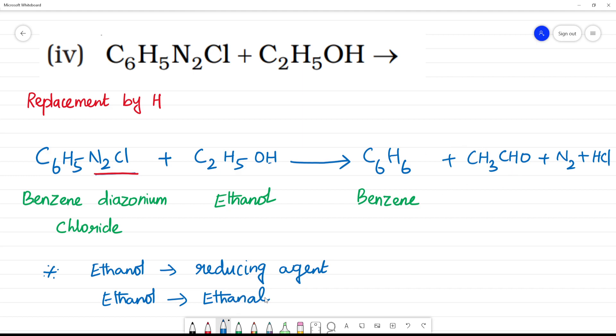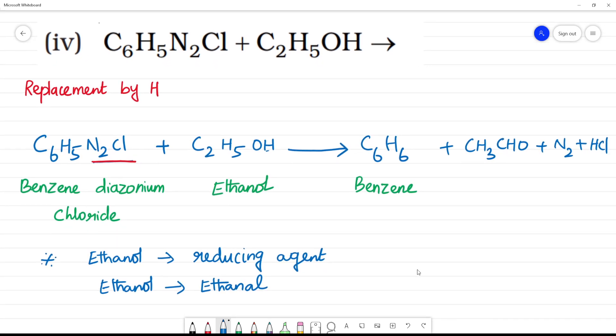So this is important. We will note this one. Benzenediazonium chloride with ethanol, it is a mild reducing agent. C2H5OH.